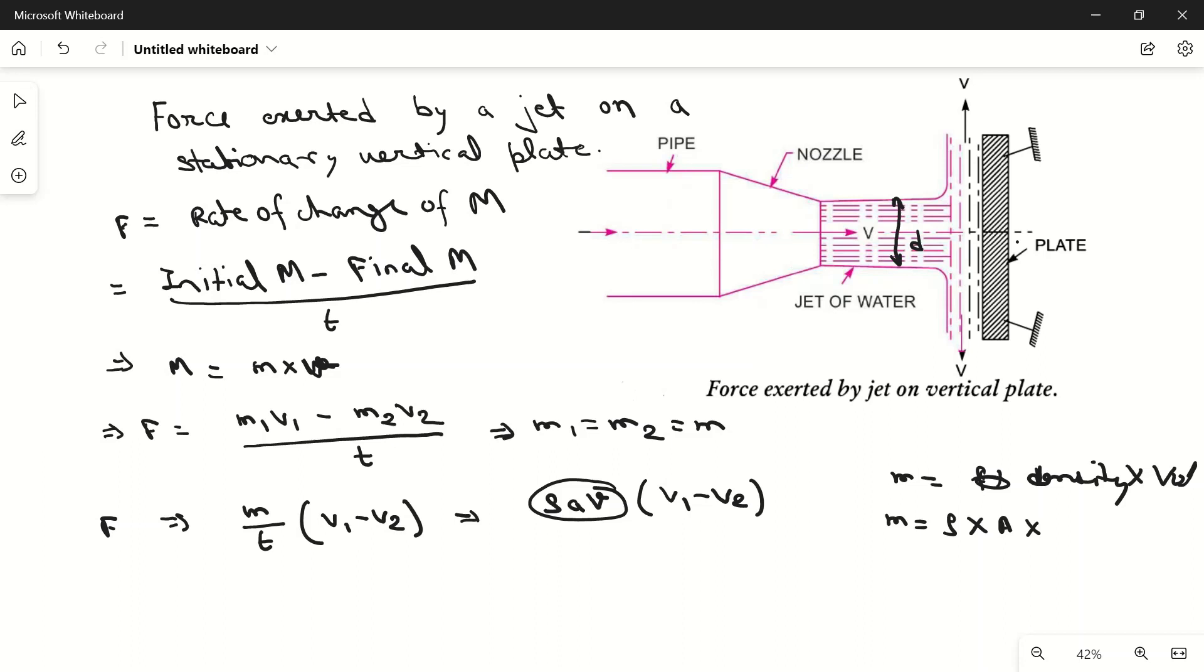So force will become mass flow rate rho AV into v1 minus v2. From this diagram we can see that v1 is V, it is given, so rho AV in bracket V minus v2.